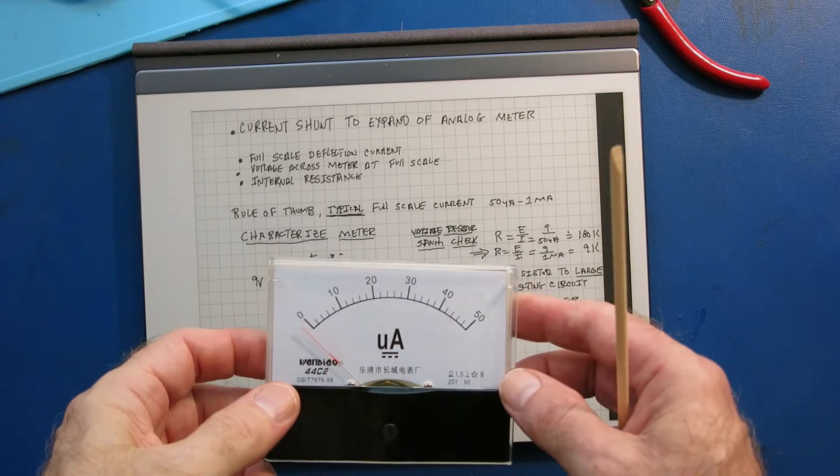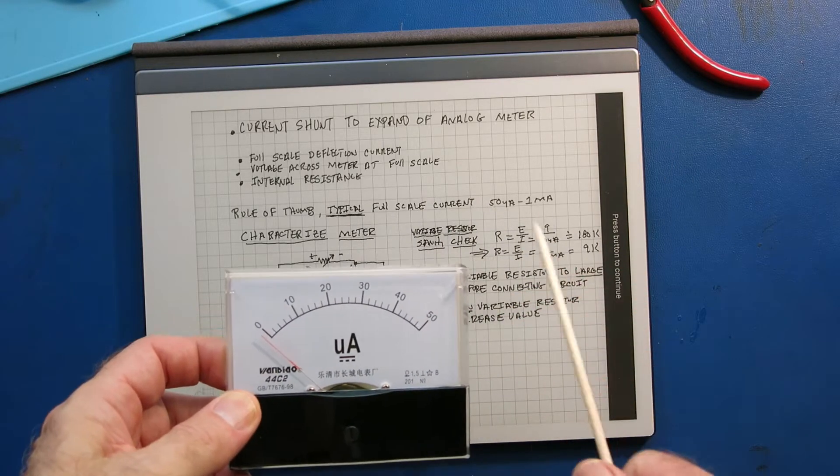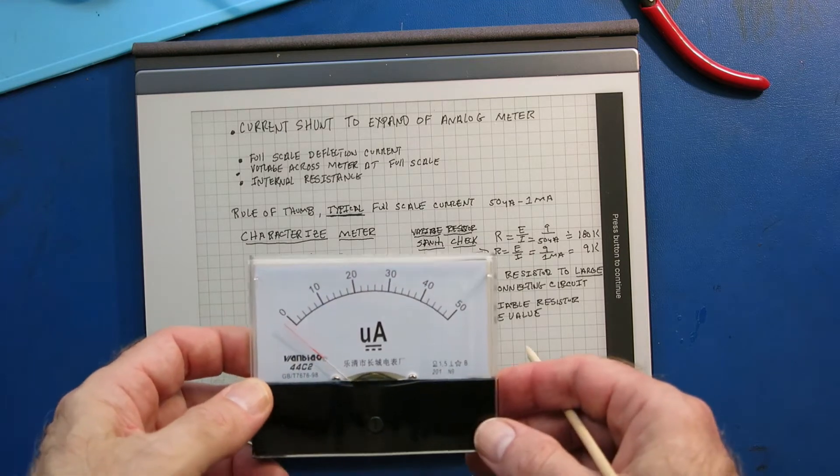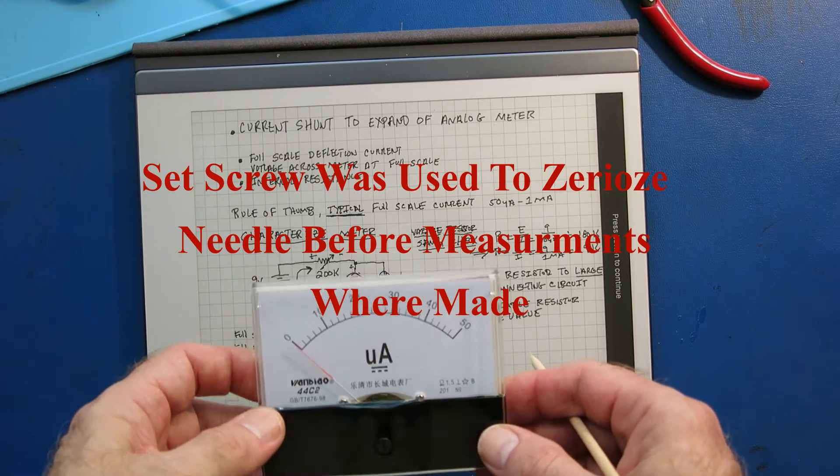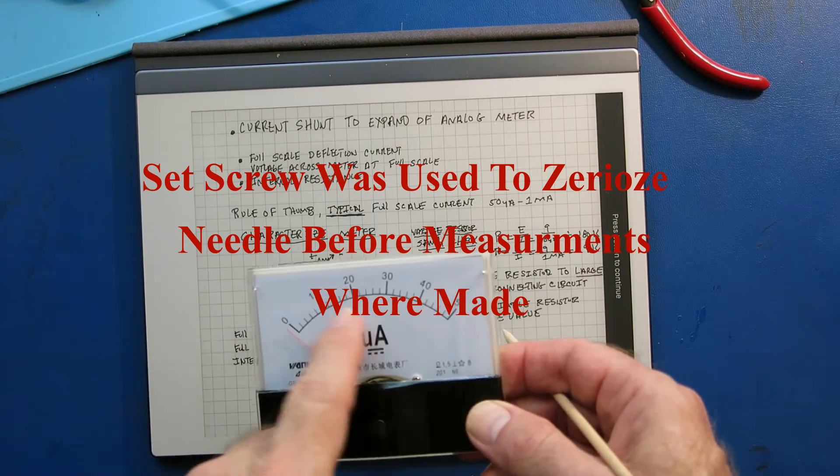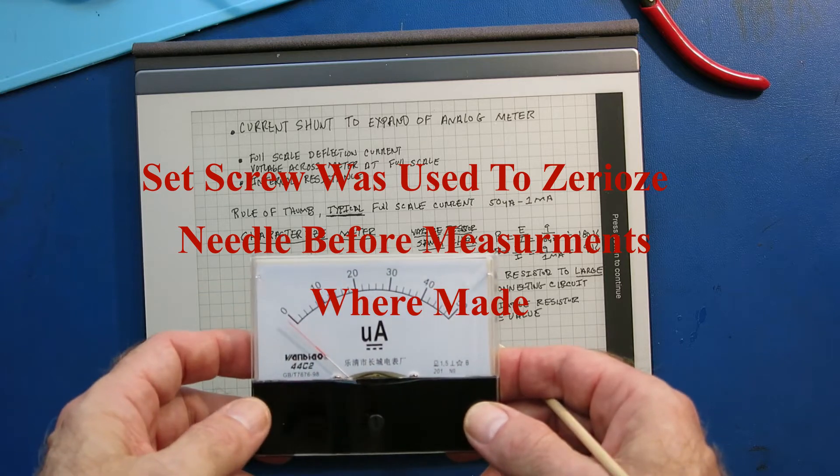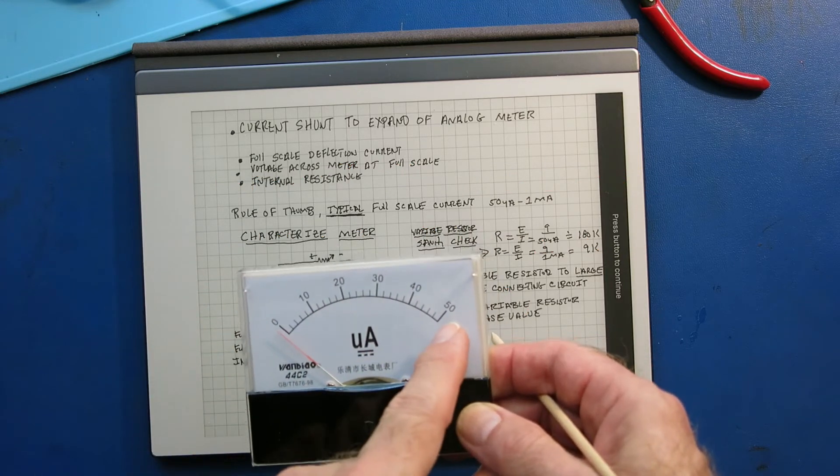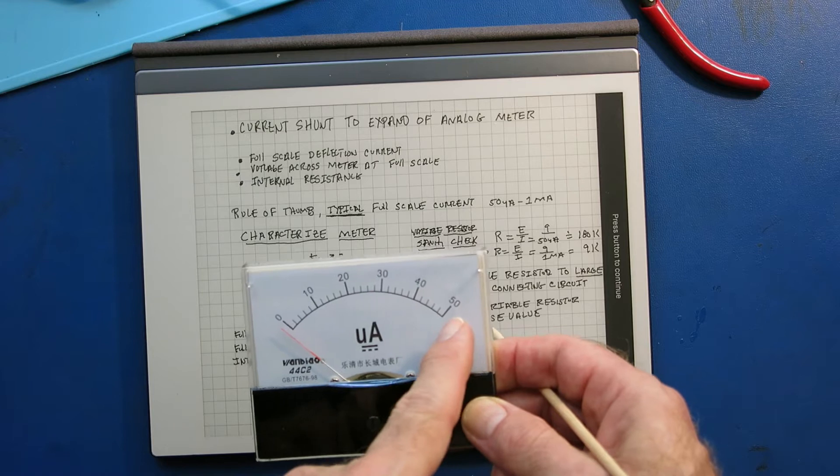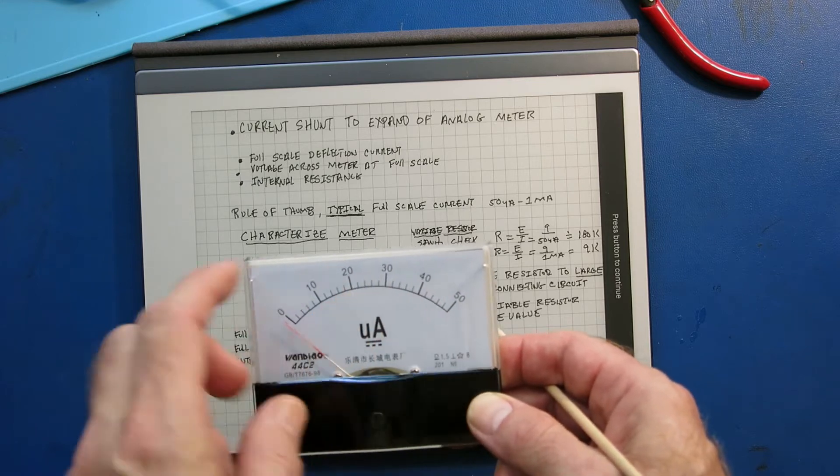The method we use to increase the full-scale range is called using a current shunt. And to figure out the value of that current shunt we need to characterize, find the specification of this meter, the actual full-scale deflection current plus the voltage across the meter at full-scale.